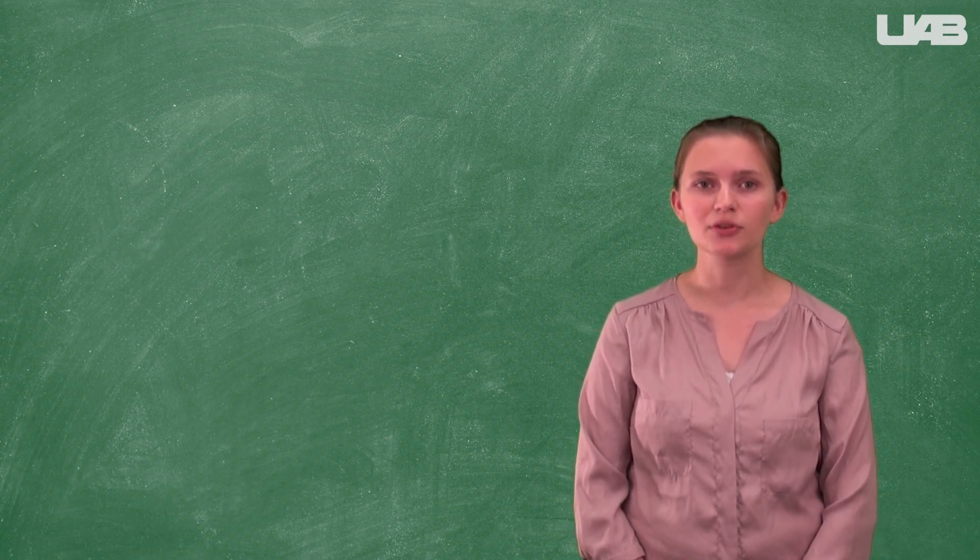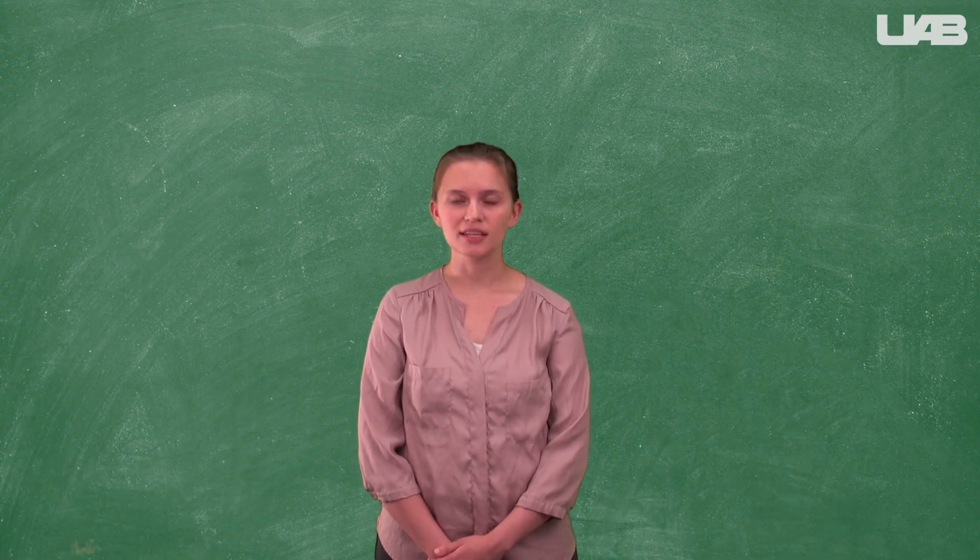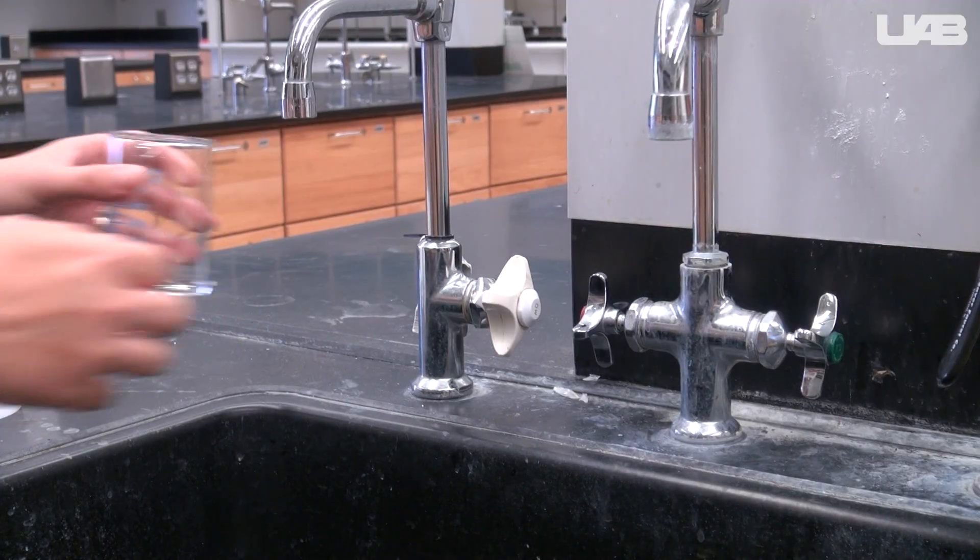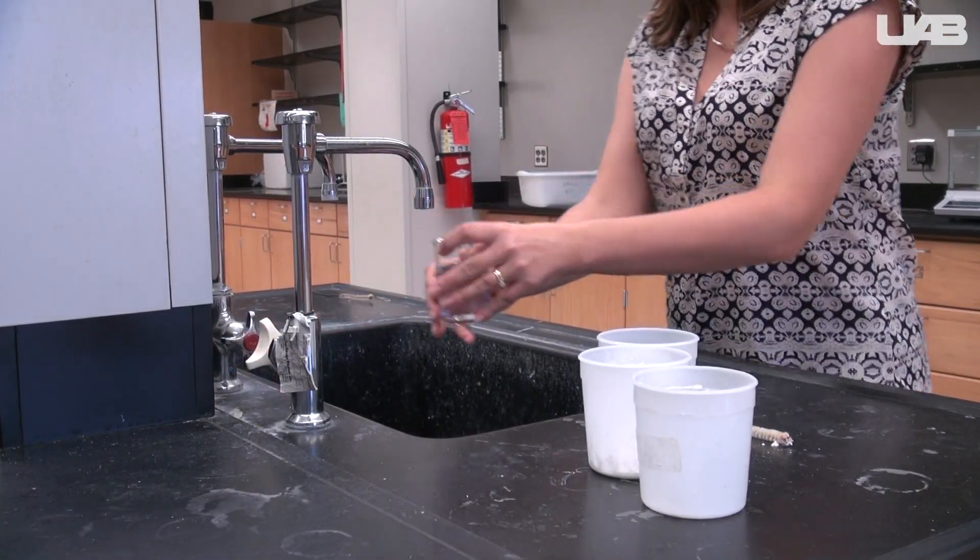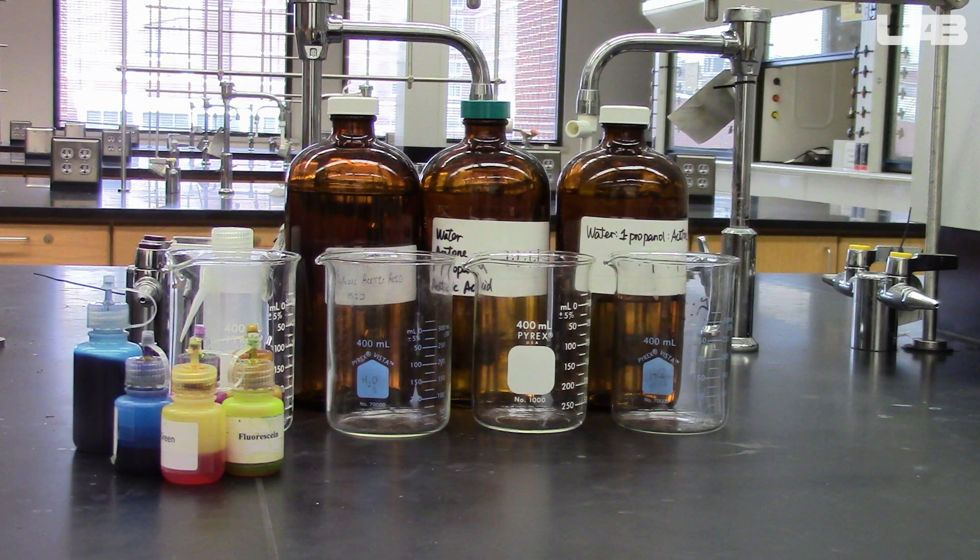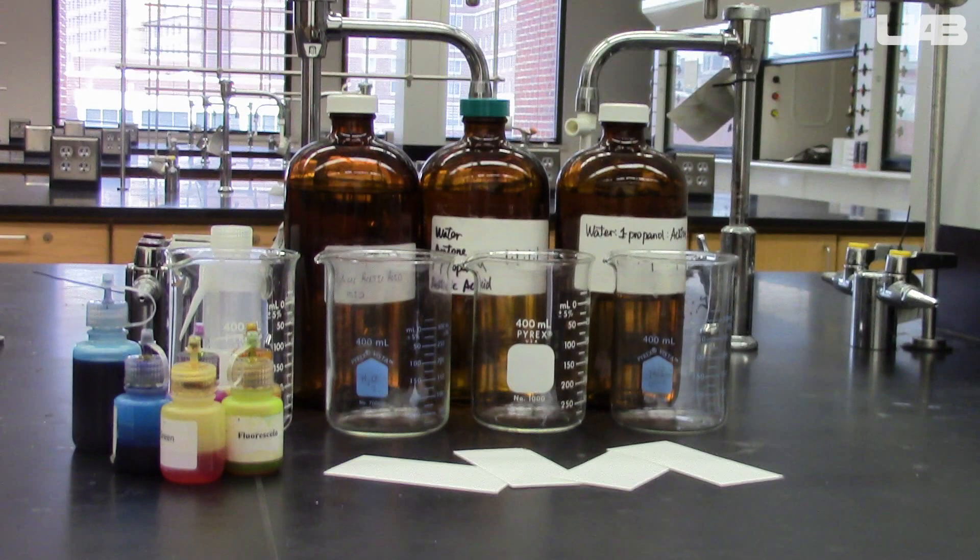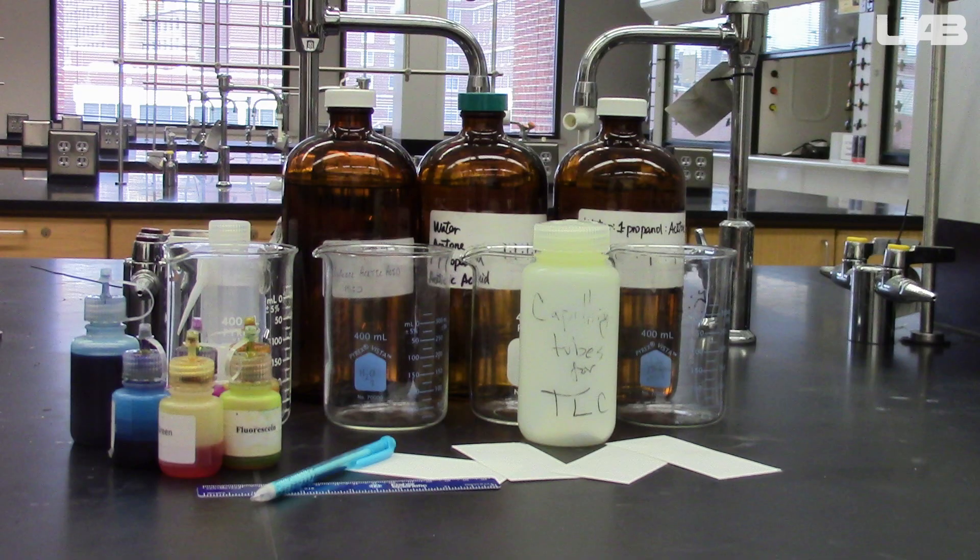We'll go through the disposal guidelines at the end of the video. For exercise one, you will need the three organic solvent mixtures and water. The deionized water comes out of the faucet with a white handle, one of each of the five dyes, four beakers, a bottle of an unknown, four thin layer chromatography plates, enough capillary tubes for each of the dyes plus the unknown, a pencil, and a ruler.